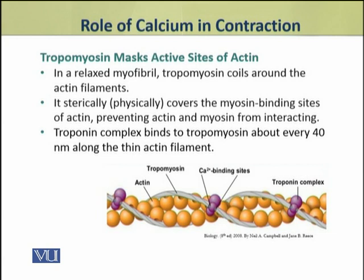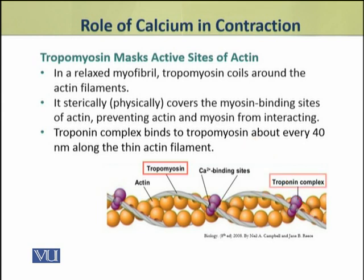In a relaxed myofibril, tropomyosin coils around the actin filaments. During this coiling, it physically covers the myosin binding sites of actin. Because of this, actin and myosin are prevented from interacting. Troponin attaches to tropomyosin at every 40 nanometer interval, and helps to hold and maintain tropomyosin in its position.